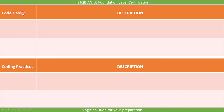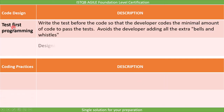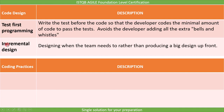The next group is based on code design, which includes two practices: test-first programming and incremental design. In test-first programming, we write the test before the code so that the developer codes the minimal amount of code to pass the tests, avoiding the addition of unnecessary features. Next is incremental design: designing when the team needs to, rather than producing a big design up front. In most organizations, people first write the code and then make all the designs at the end just to comply with the process, which is not a correct practice. We should design in an incremental way.